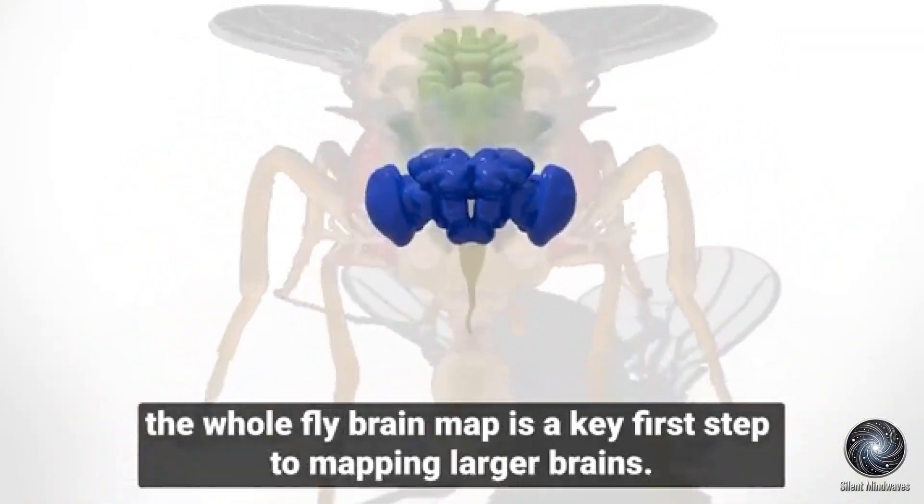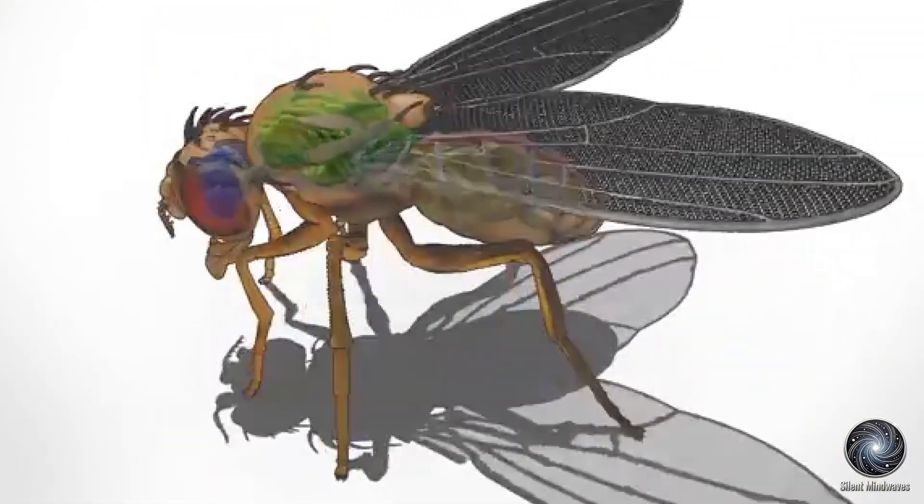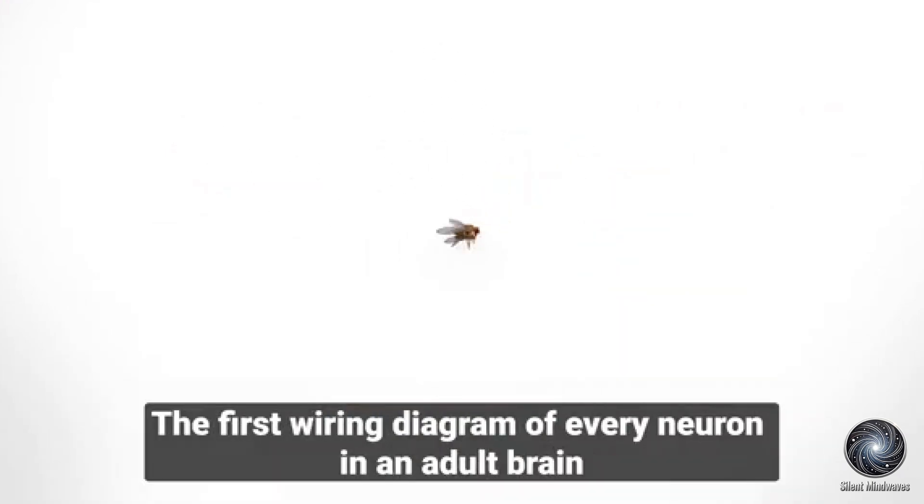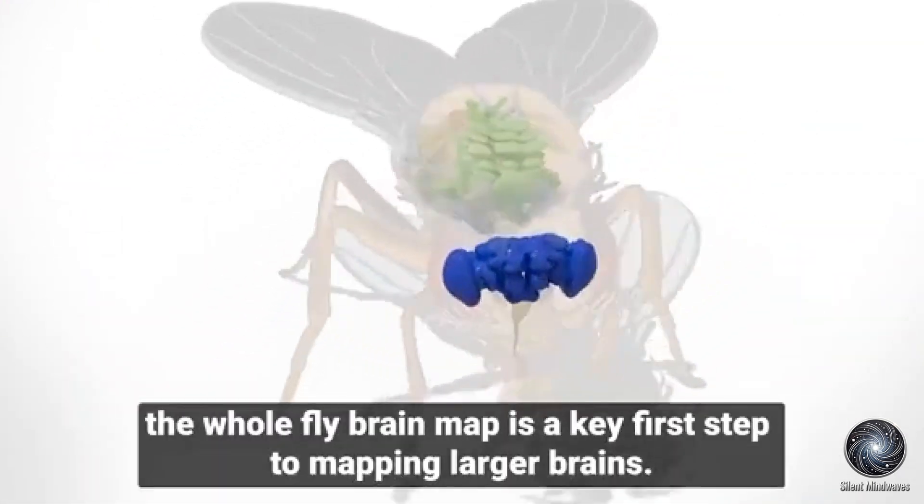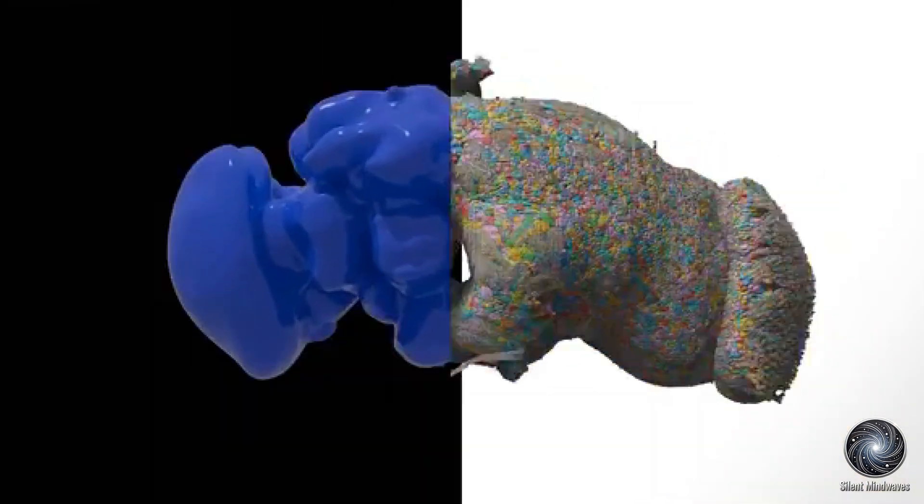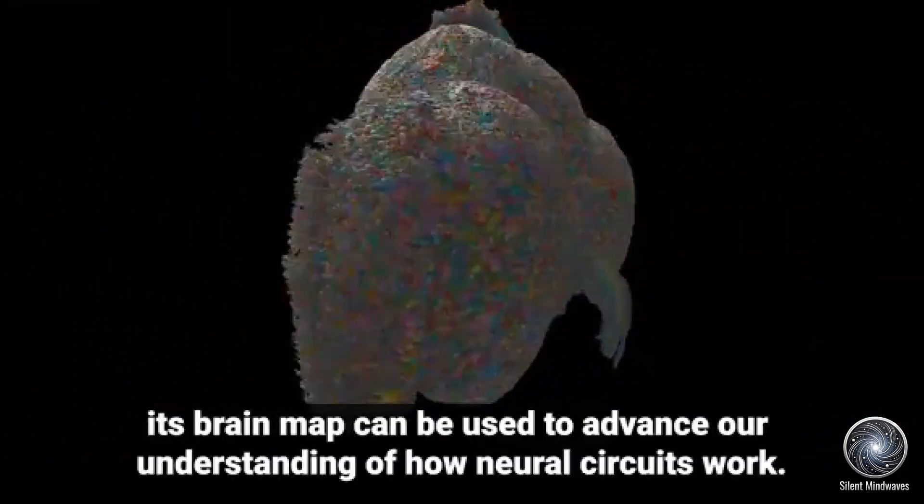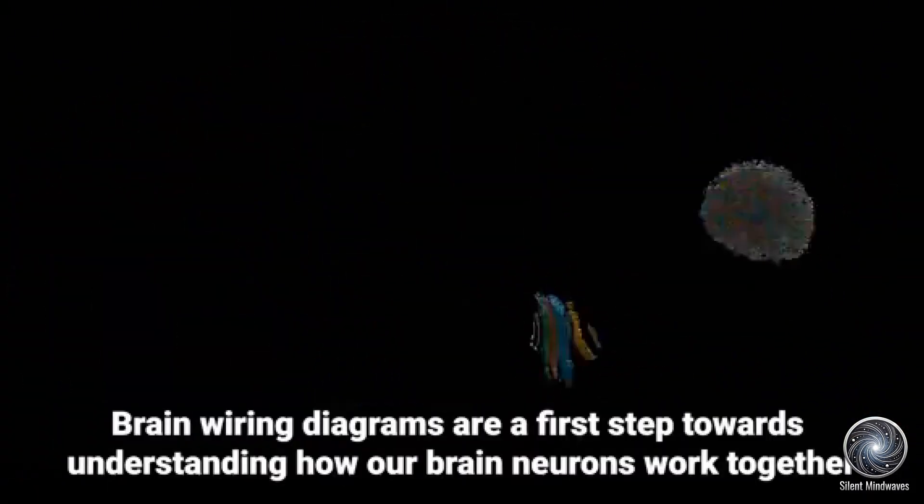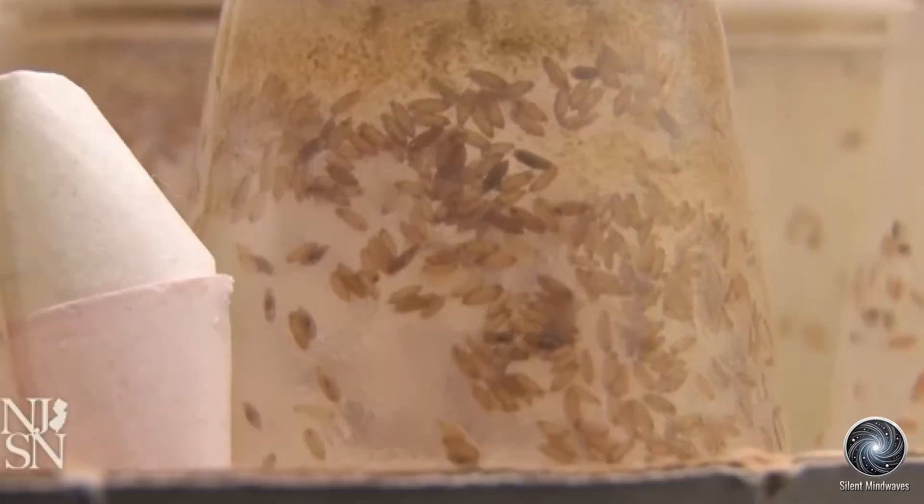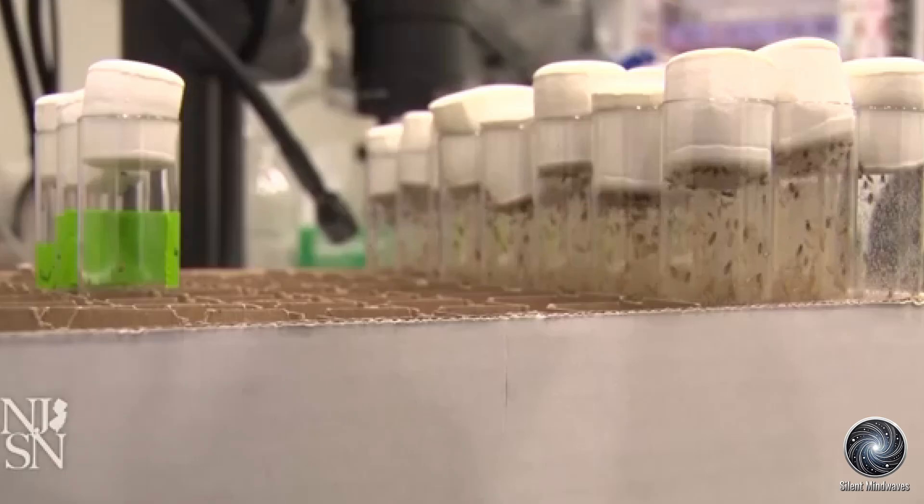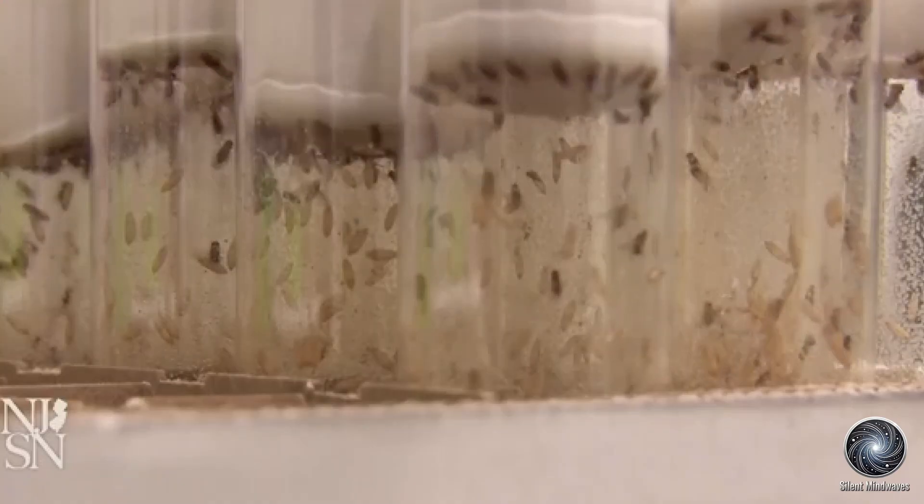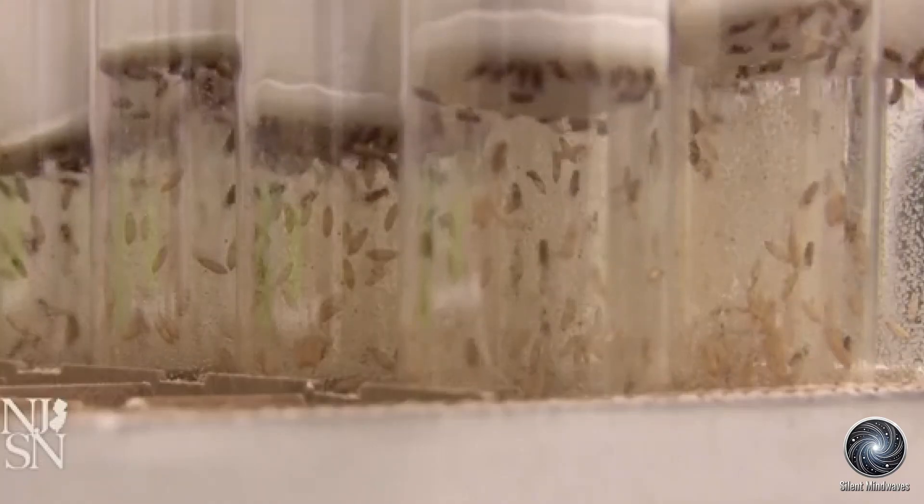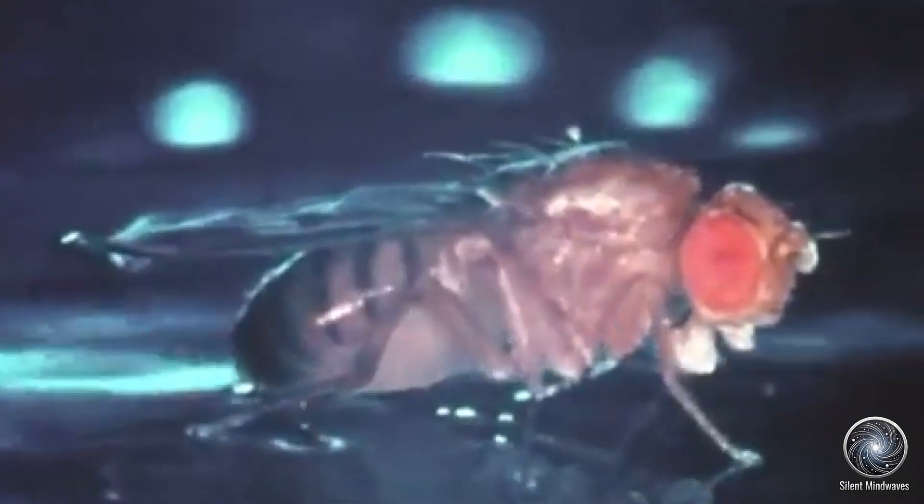One of the most exciting aspects of this achievement is the creation of a digital simulation of the fruit fly's brain. This virtual brain, built from the detailed connectome, can predict the real fly's responses to various stimuli with over 95% accuracy. For instance, when the virtual fly encounters sweet or bitter stimuli, its digital proboscis, akin to a human tongue, reacts as a real fly's would.